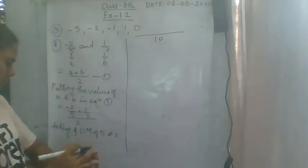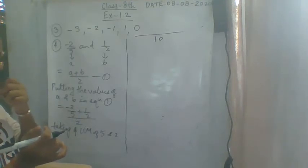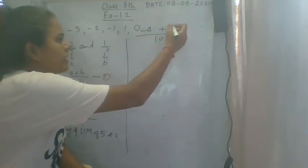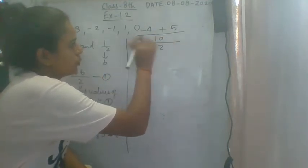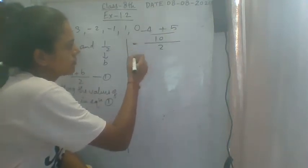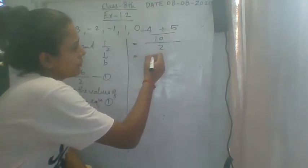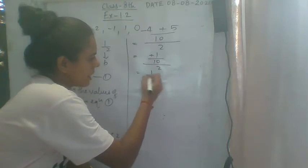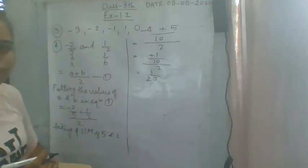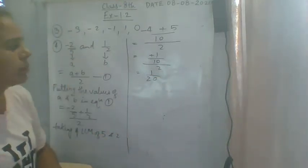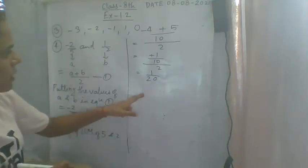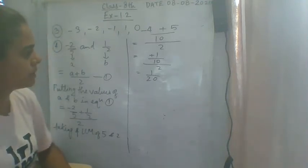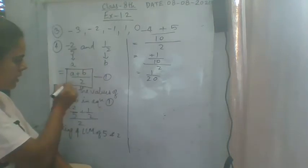The LCM is 10. So minus 2 by 5 becomes minus 4 over 10, and 1 by 2 becomes 5 over 10. So we get minus 4 plus 5 divided by 10, all divided by 2, which gives 1 over 10 divided by 2, giving us 1 by 20. By this method we can find 10 rational numbers between any two rational numbers using the formula A plus B divided by 2.